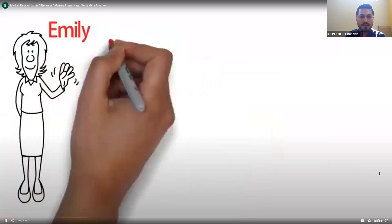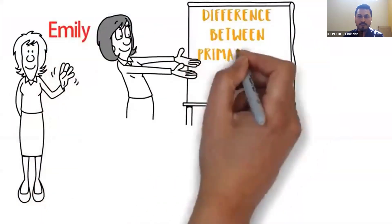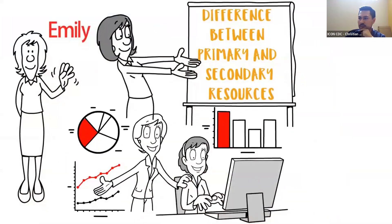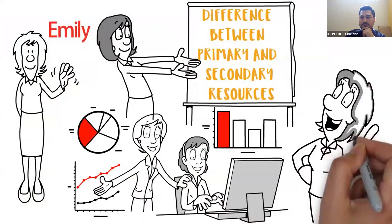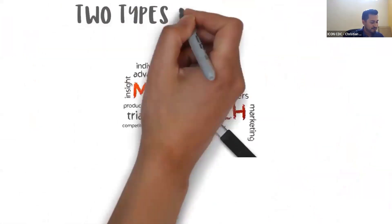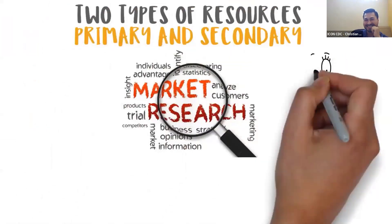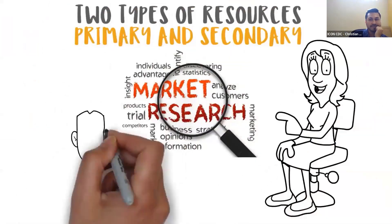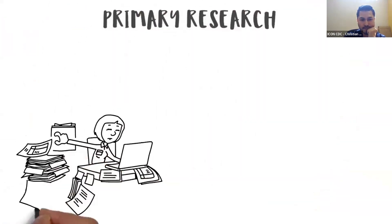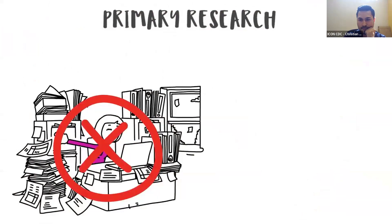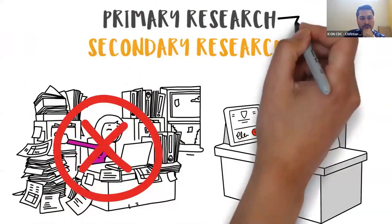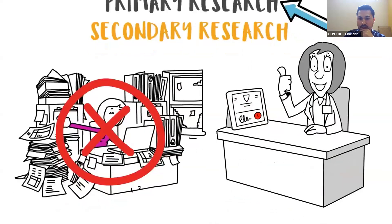My name is Emily, and today I will be illustrating what market research is and the difference between primary and secondary resources. Marketing research provides businesses with information they need to make informed decisions. When conducting market research, you will encounter two types of resources — primary and secondary — and in this video you will learn about these resources and how to differentiate between the two. Primary research refers to collecting data that has not been gathered before.